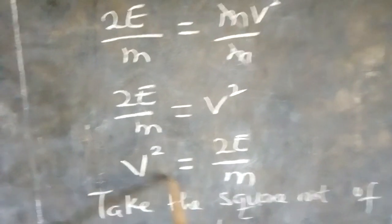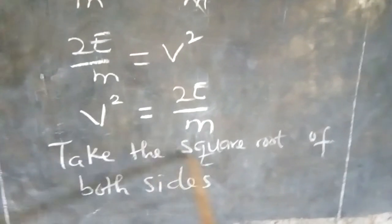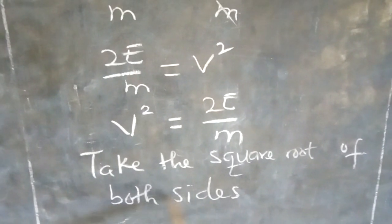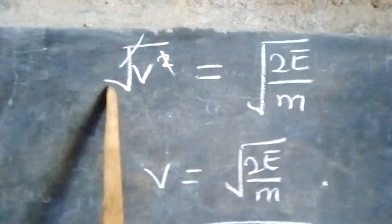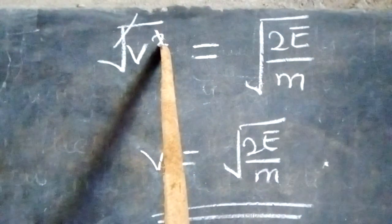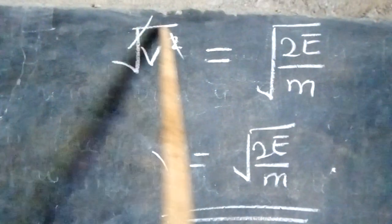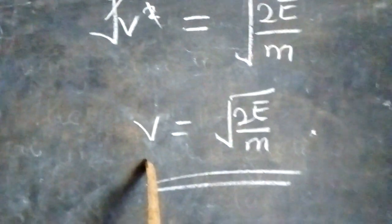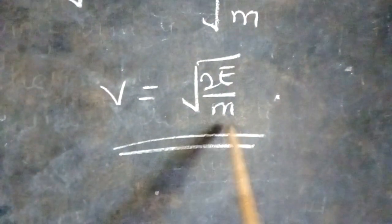We need v. We have to make v the subject of the formula, not v squared. So, we need to remove this square. How do we do that? Take the square root of both sides. You put square root here, then you put square root here. Square root cancels square. So, when the square root here cancels this square, we have only v. So, the answer is v equals square root of 2E all over m.